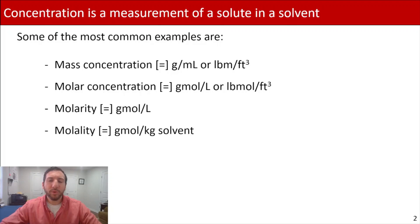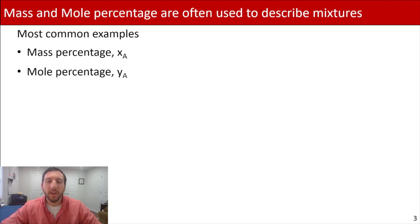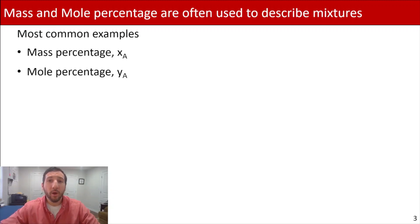Now, this is the situation where we have a solute dissolved in a solvent. But if instead we have a mixture of components where they're all in the same phase and not really dissolving one component within another, we represent this numerically using mass or mole percentages. Mass percentage uses the variable x with a subscript for the component, and mole percentage is represented by lowercase y with a subscript for the component. Mass or mole percentages are the most common things you'll use when speaking about a mixture.